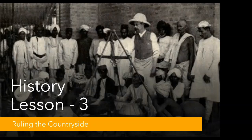We have studied that on 12th August 1765, the Mughal Emperor appointed the East India Company as the Diwan of Bengal. As Diwan, the company became the chief financial administrator of the territory under its control. Now it had to think of administering the land and organizing its revenue resources in a way that could yield enough revenue to meet the growing expenses of the company.